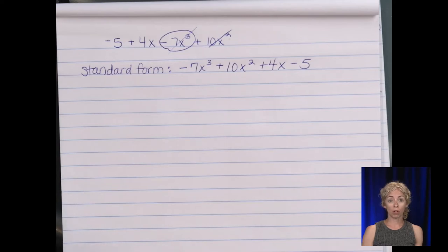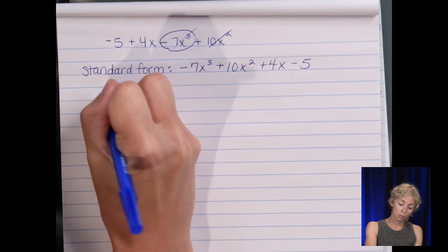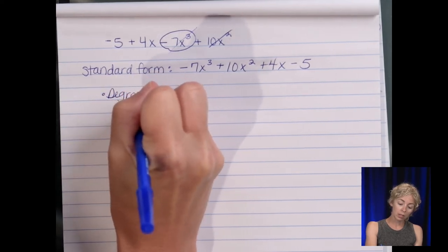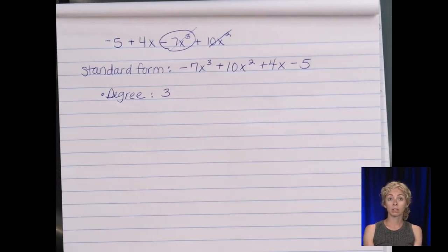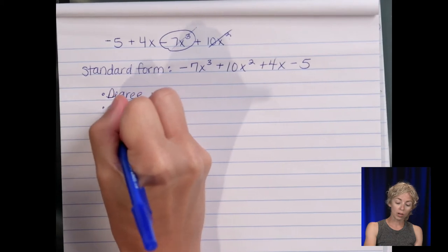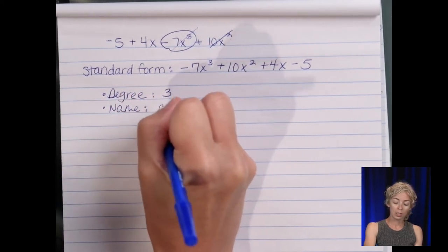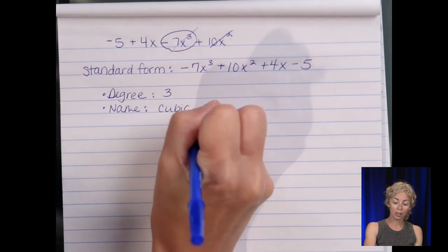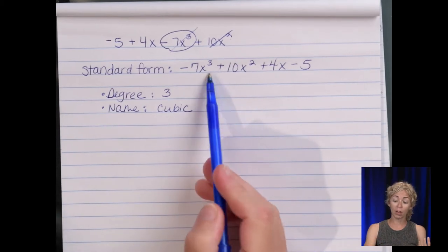So let's also talk about some other vocab. The degree of our polynomial is a degree three. So therefore its name is a cubic polynomial. It could be quartic if it was to the fourth power. If the largest was the two, it'd be a quadratic.